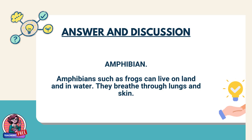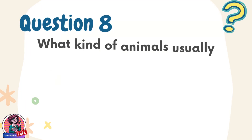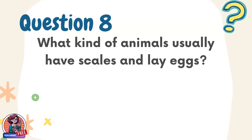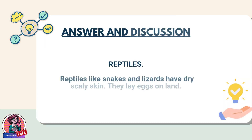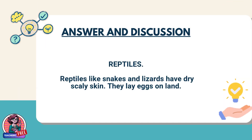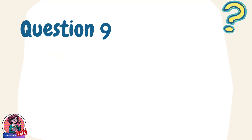Question 8. What kind of animals usually have scales and lay eggs? Answer: Reptiles. Reptiles like snakes and lizards have dry scaly skin. They lay eggs on land.